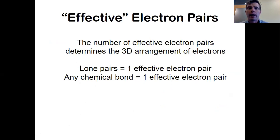So how do we figure this out? What you have to do is count something called effective electron pairs. The number of effective electron pairs determines the 3D arrangement of electrons. Here's how you count effective pairs. A lone pair of electrons counts as one effective pair. And any chemical bond counts as one effective pair. Doesn't matter if it's single bond, double bond, triple bond, any chemical bond counts as an effective pair. So let me give you a couple of examples.